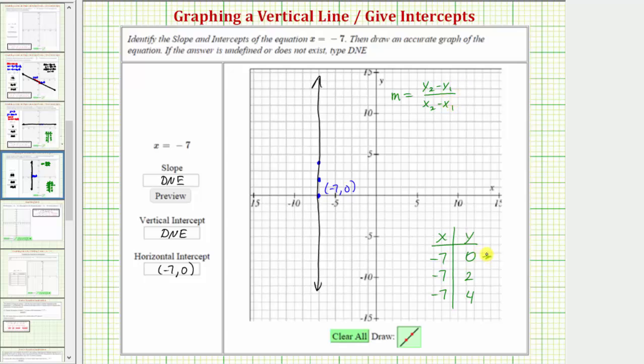So let's go ahead and use this ordered pair, which is negative seven comma zero, and this ordered pair of negative seven comma two. Let's let the first ordered pair be x sub one comma y sub one, and the second ordered pair be x sub two comma y sub two.